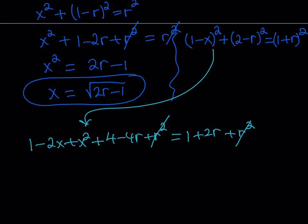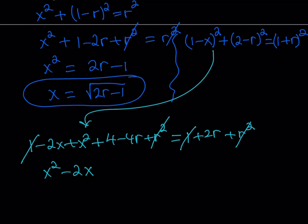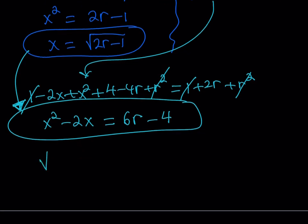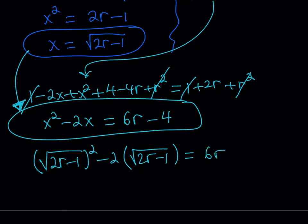Let's simplify the second equation. Expanding: 1 − 2x + x² + 4 − 4r + r² = 1 + 2r + r². The r² cancels. Rearranging, I get x² − 2x = 6r − 4. Now substituting x = √(2r − 1) into this: (√(2r − 1))² − 2√(2r − 1) = 6r − 4. That simplifies to: 2r − 1 − 2√(2r − 1) = 6r − 4.